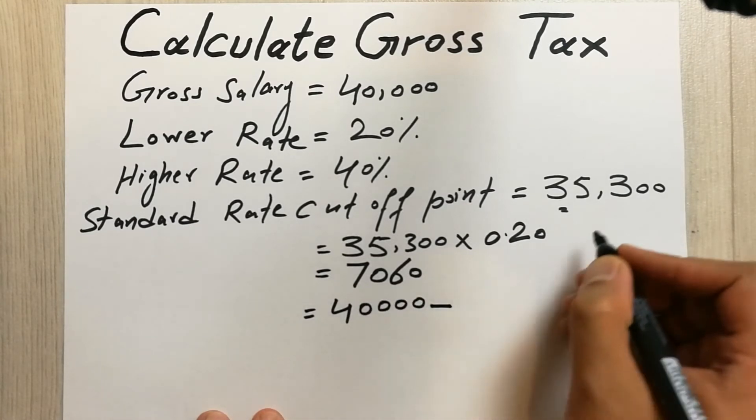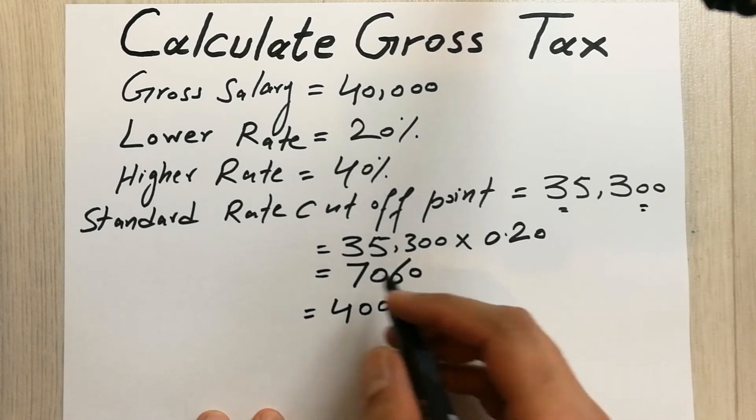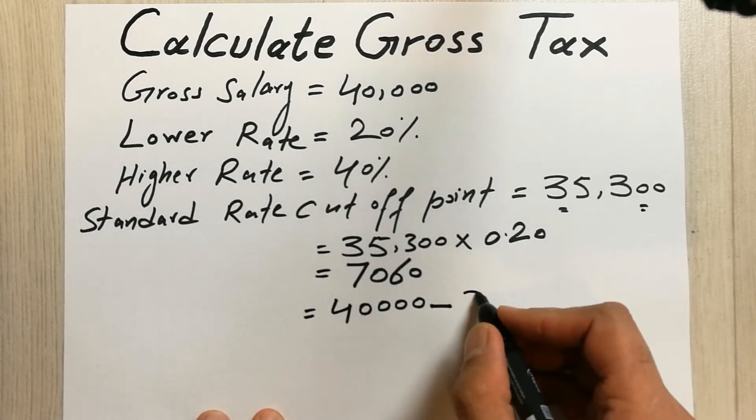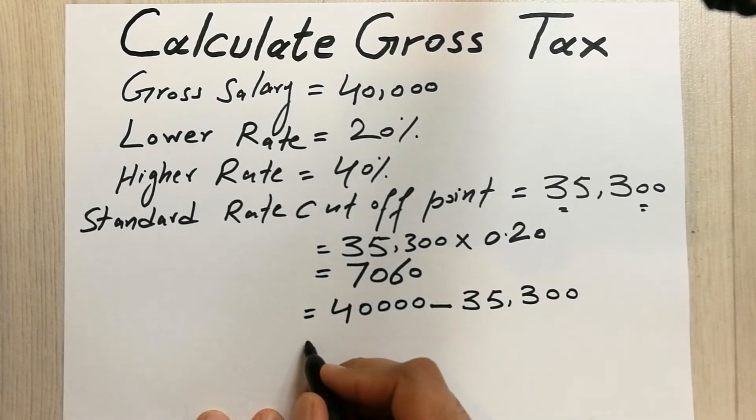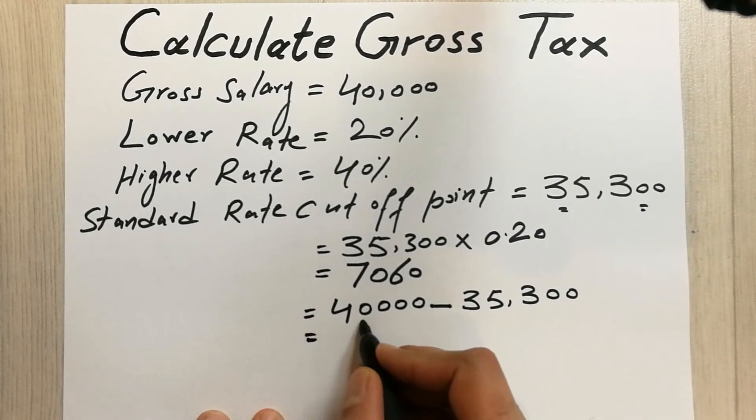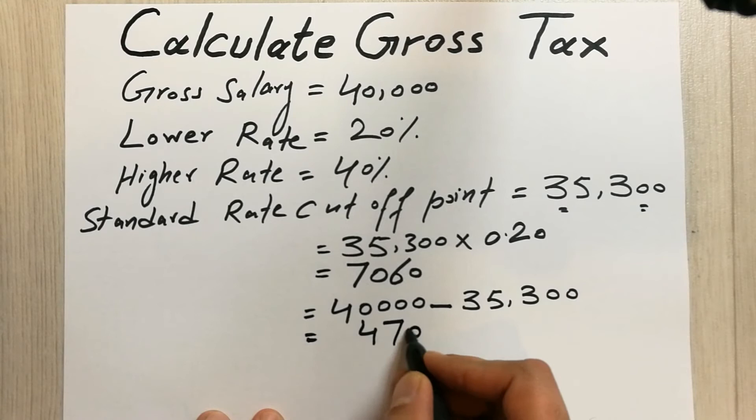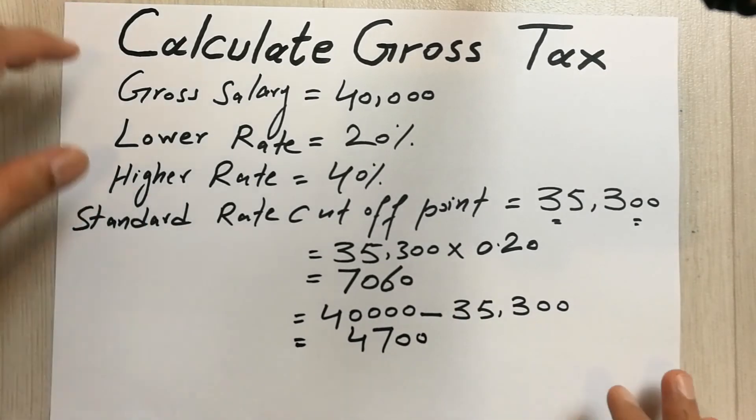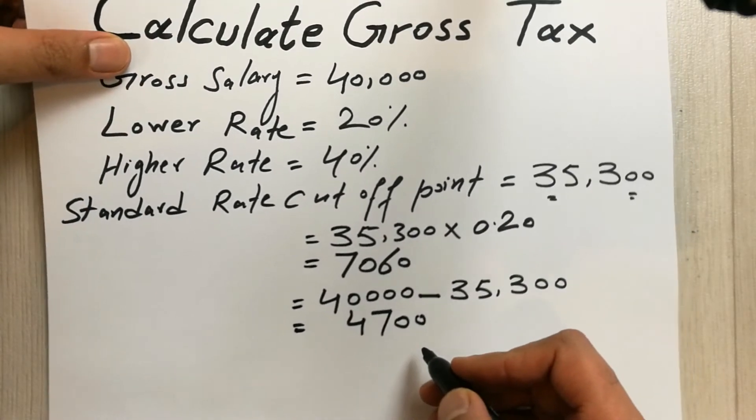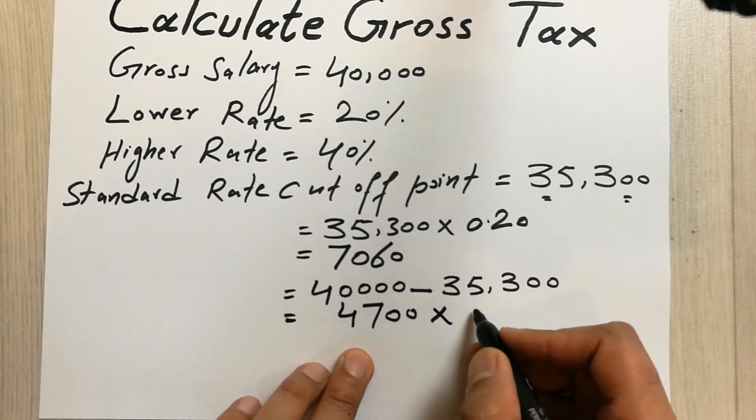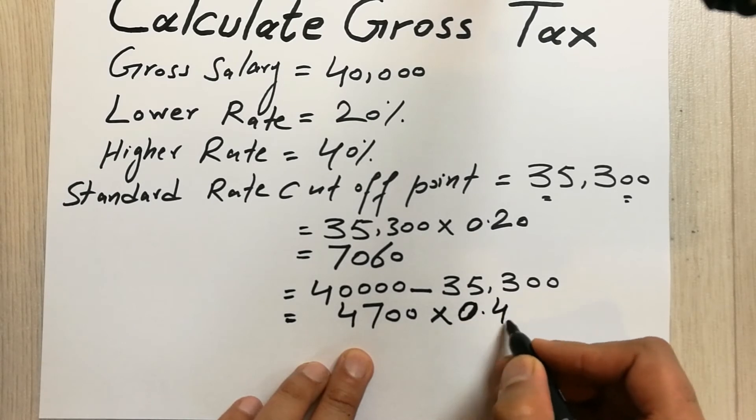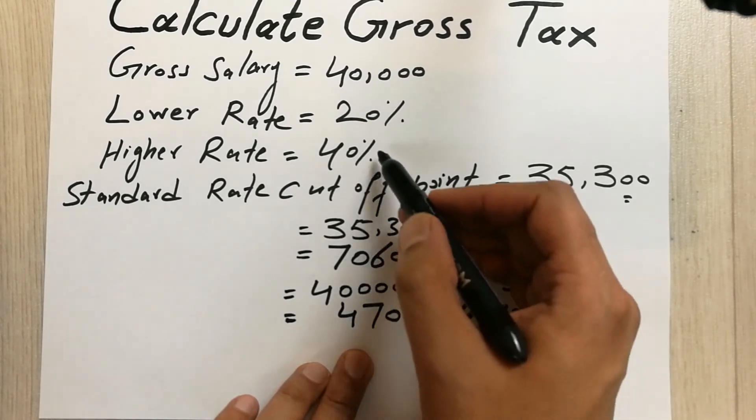Now what we have to do is take the gross salary which is 40,000, then we have to minus it with this standard rate cutoff point which is 35,300. So our answer will be 4,700. Now on this 4,700 we have to multiply it with 40%, so 0.40.